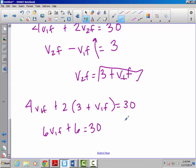Subtract 6 from both sides, divide by 6. So we get our final speed of our first block to be 4 meters per second. Now once I get 4, I can come up here and plug that into this. And I can figure out that my V2f has to be 7.